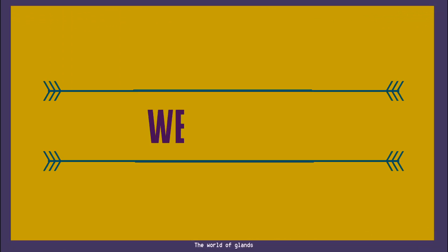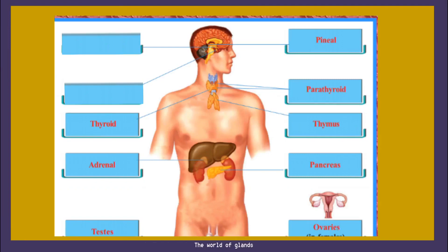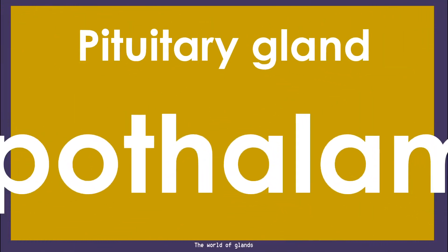Hello, my dear students. A hearty welcome to a new module of BioWorld. In the previous class we discussed about certain endocrine glands. Today we are going to discuss the remaining two endocrine glands which play a key role in controlling the other glands too — they are the pituitary gland and hypothalamus.